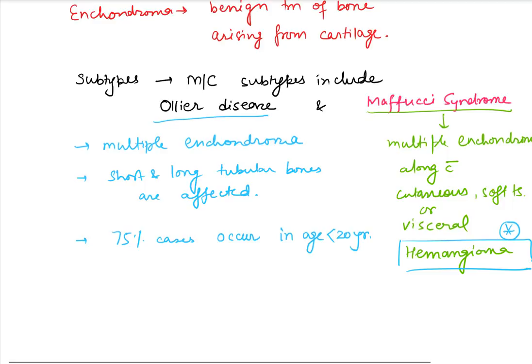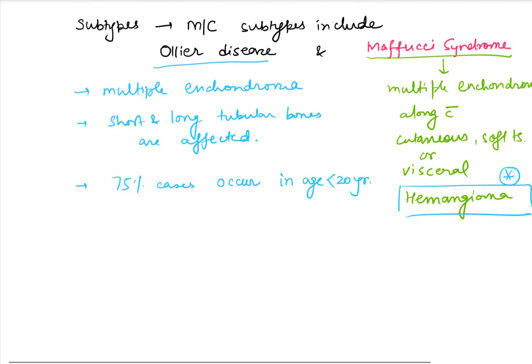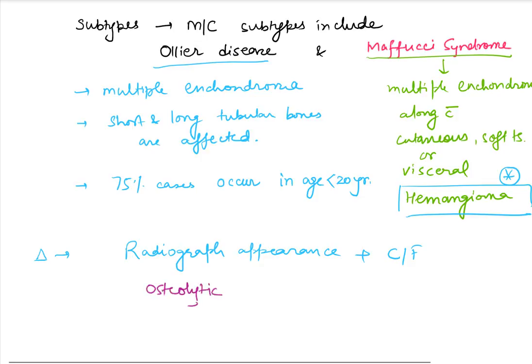When these features are present, we call it Maffucci syndrome. The diagnosis between these two diseases is made using radiographic appearance and clinical features. On radiograph, both patients appear similar — we see multiple oval, linear, or pyramidal osteolytic lesions with well-defined margins.